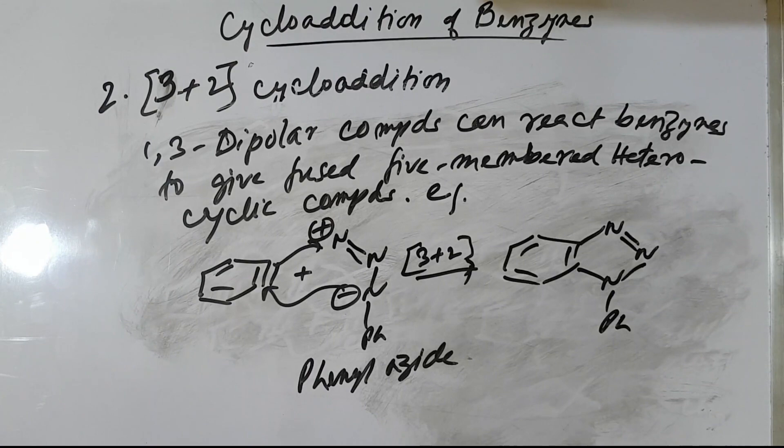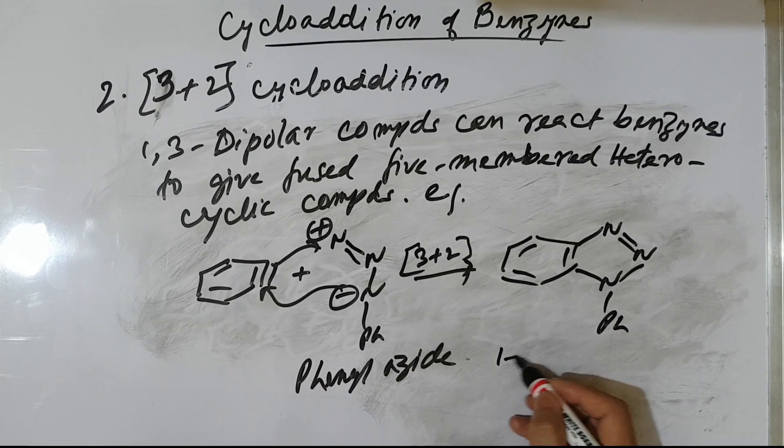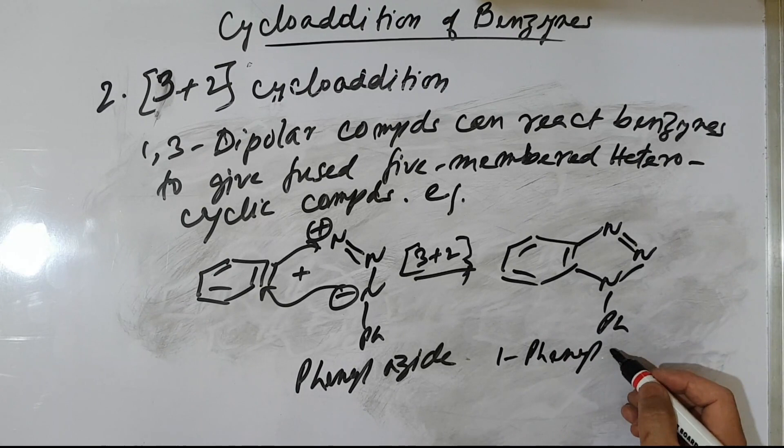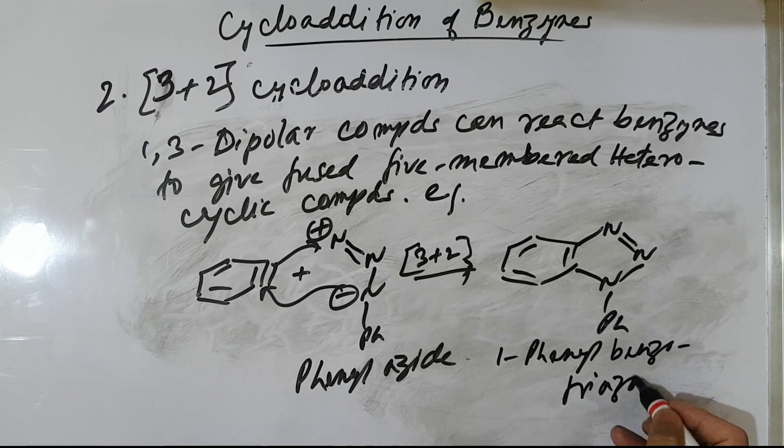So phenyl azide reacts with benzyne to give 1-phenylbenzotriazole. Similarly, you can react another example — benzoyl azide, a diazo compound, can react with benzyne.